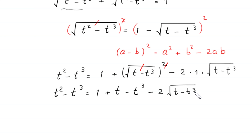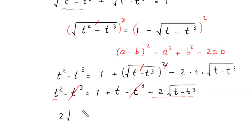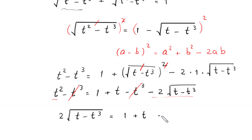Now if we add t³ to both sides, the t³ terms cancel. We move the negative 2 times root(t minus t³) to the left and t² to the right, giving: 2 times root(t minus t³) equals 1 plus t minus t².